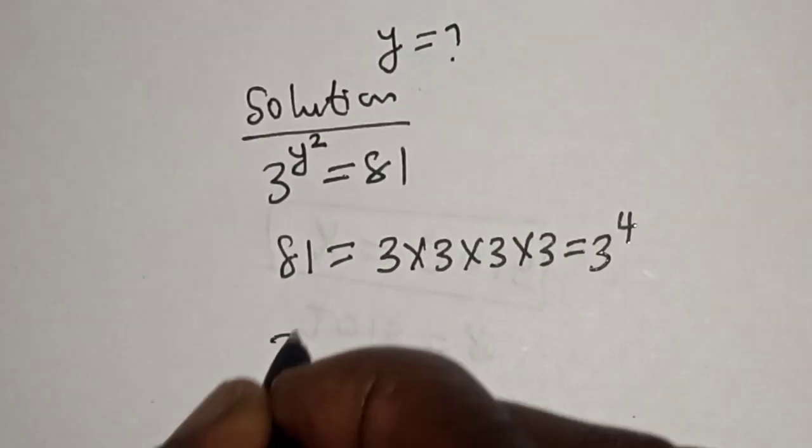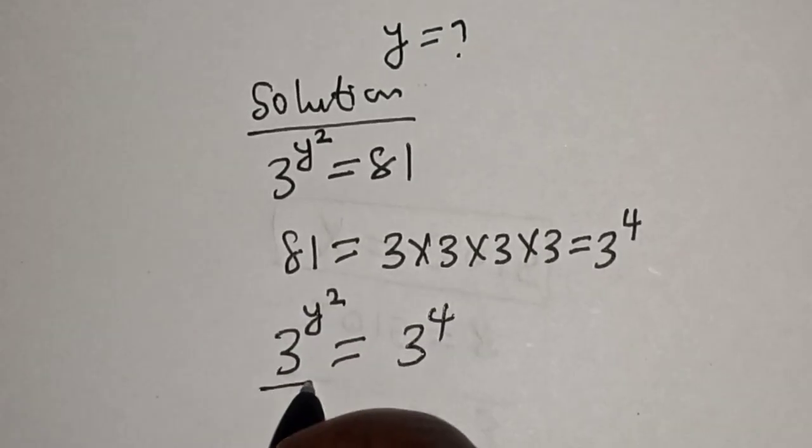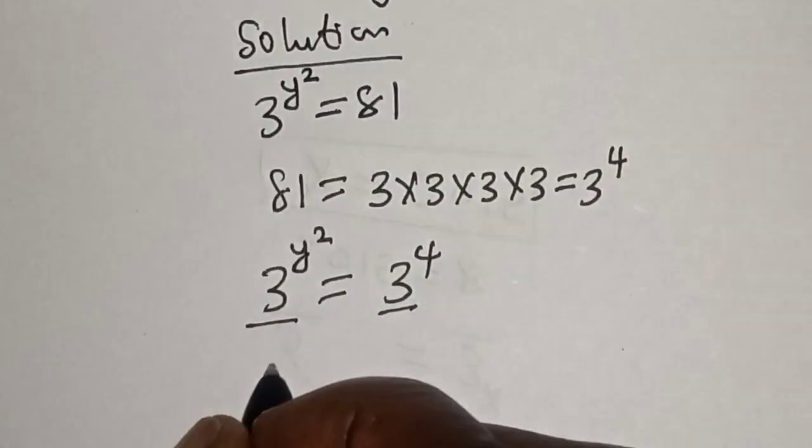Then this is 3 raised to power y square is equal to 3 raised to power 4. This is basically, then we work with exponents.